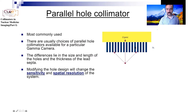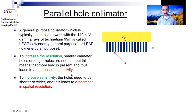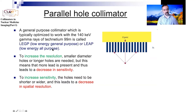How thin, thick, or tall you make the collimator depends on the application. Changing the size of the hole, the thickness of the septa, or the length of the holes all have implications on the sensitivity of the system and its spatial resolution. What is most commonly used is the low energy general purpose collimator — called LEGP or LEAP — designed for 140 keV. For higher energies you need higher energy types of collimators.